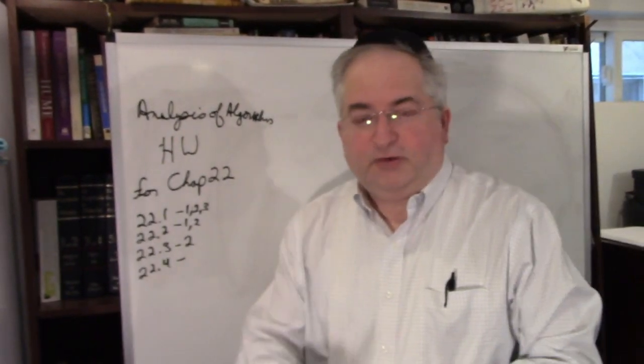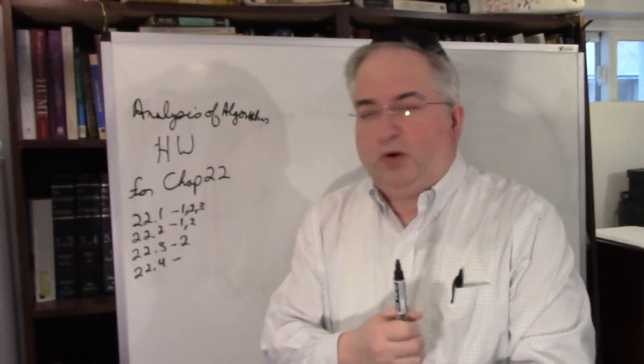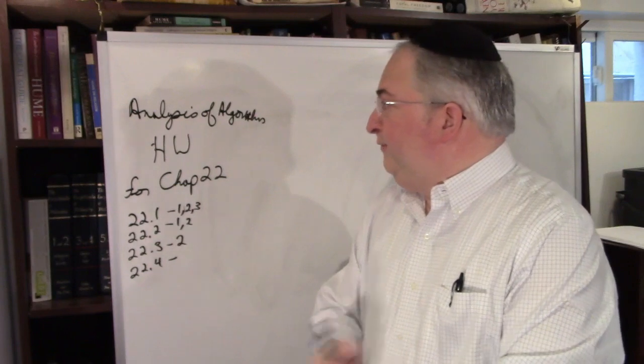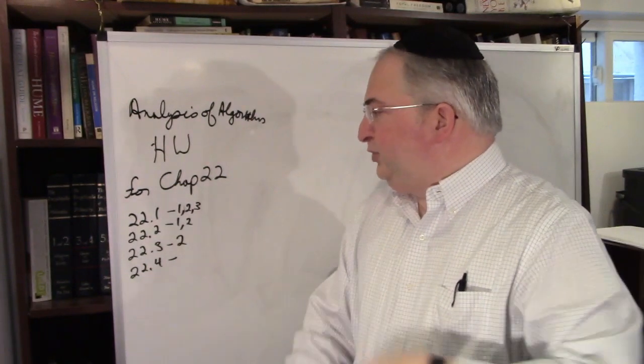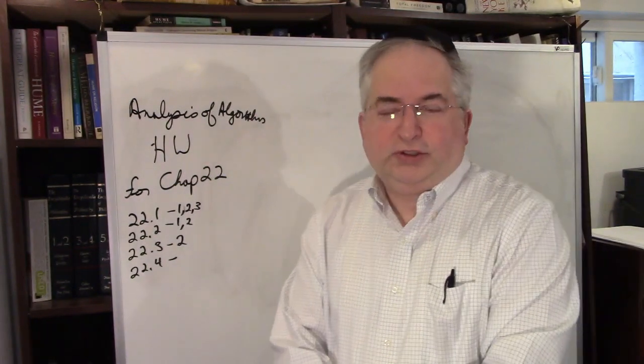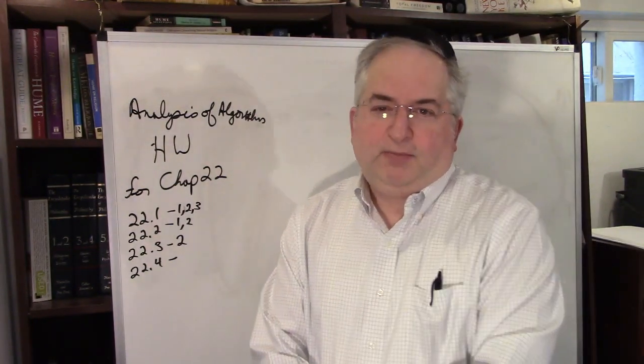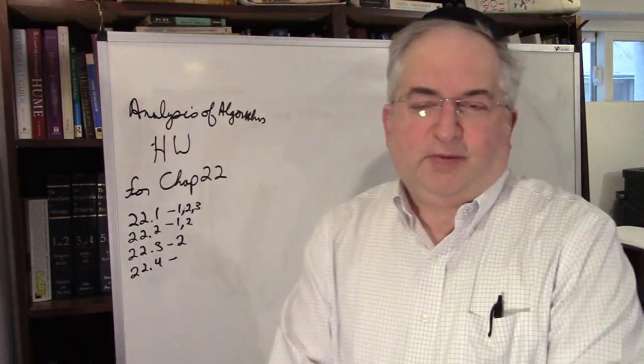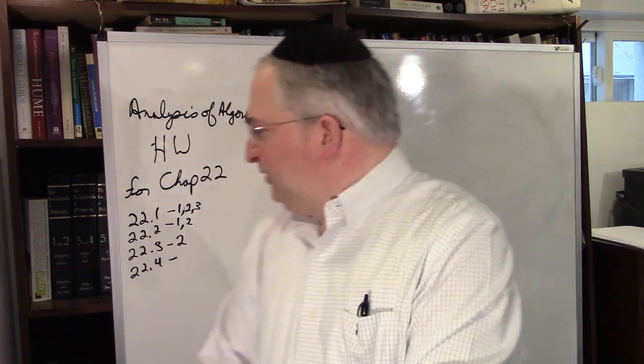Hi, this is Dallas of Algorithms. We're doing homeworks for chapter 22, which is about breadth-first search, depth-first search. It's about the beginning of graphing algorithms.